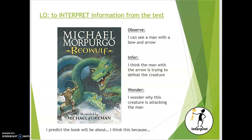So the first activity I'd like you to do — you've seen this before in school, we did it for one of our other books last term — is I would like you to have a look at the front cover and, using that interpreting skill (remember, interpreting means we're unlocking information from the text or from what we can see), I want you to have a look at what you can observe on the picture. For example, I can see a man with a bow and arrow. I want you to think about what you can infer, using the sentence starter 'I think.'